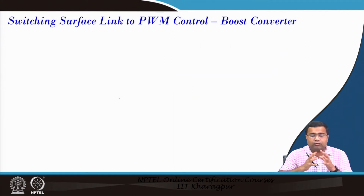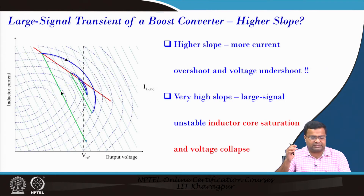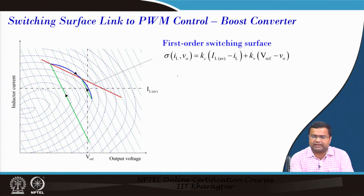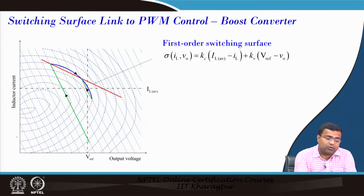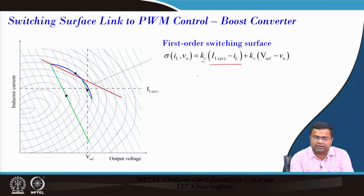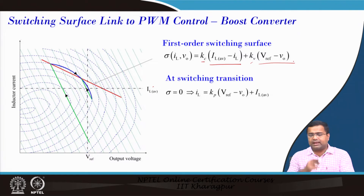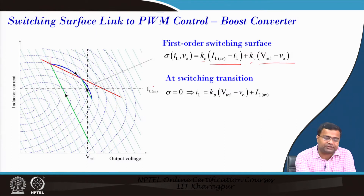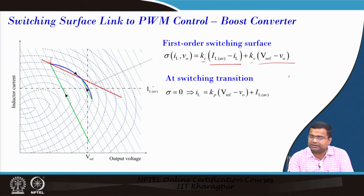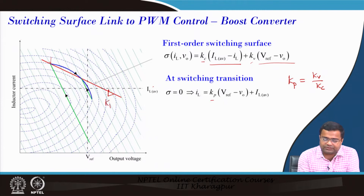We want to link how this switching surface is connected to our controller. The switching surface can be written as: some gain into current loop error current, where this is the average current, plus some gain into voltage error. If we normalize Kc — dividing because they are equal at the point of transition — then Kp is nothing but Kv divided by Kc. We have one degree of freedom, and this Kp is the slope of this line.